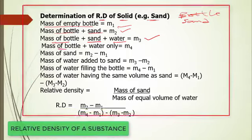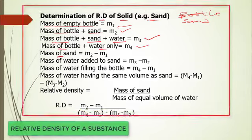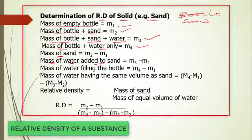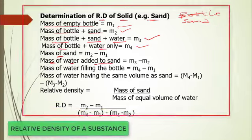We also record the mass of the bottle plus water only, which is m4. The mass of the sand equals m2 minus m1 (bottle plus sand, minus empty bottle). The mass of water added to the sand equals m3 minus m2 (bottle plus sand plus water, minus bottle plus sand), giving us the mass of water only.